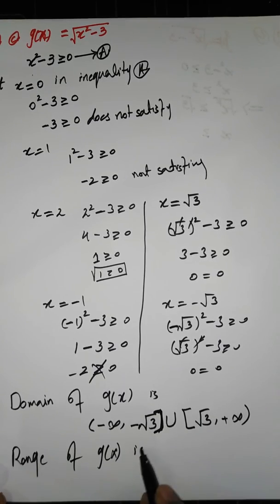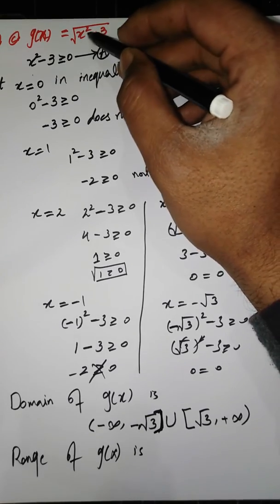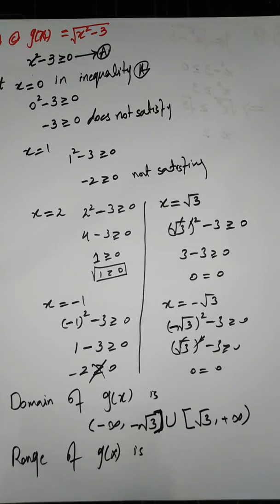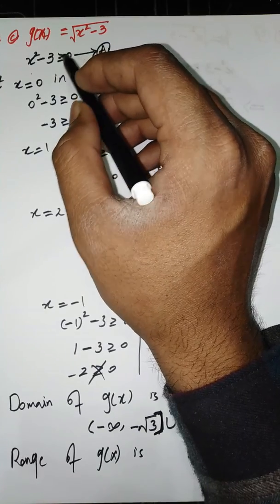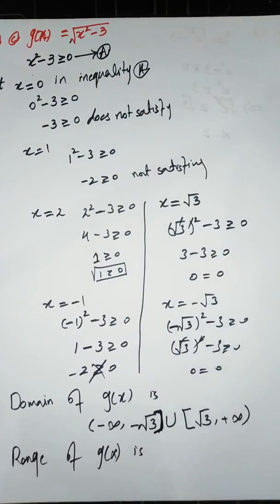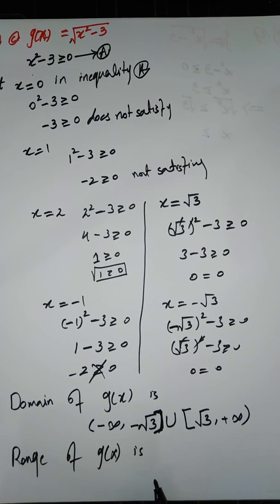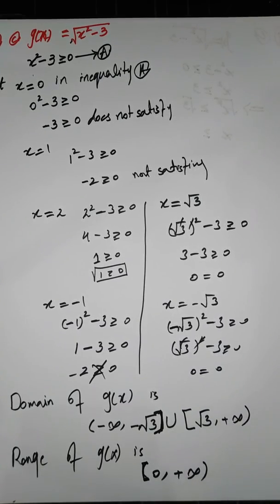To find the range of this function: since the value under the radical sign must be non-negative, the output starts from 0 to positive infinity. Negative values cannot exist in our range because we do not allow numbers that make the expression under the radical sign negative. Therefore, the range of G of X is all non-negative real numbers, from 0 to positive infinity.